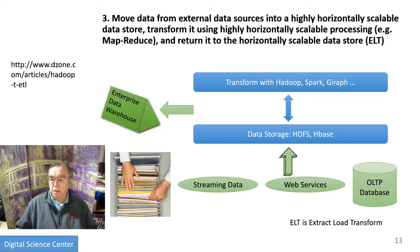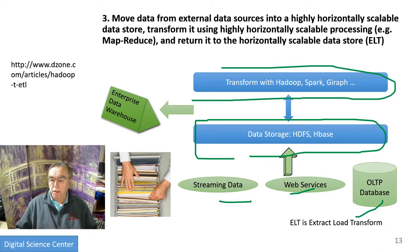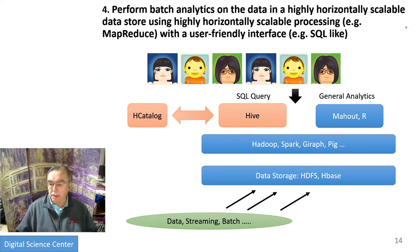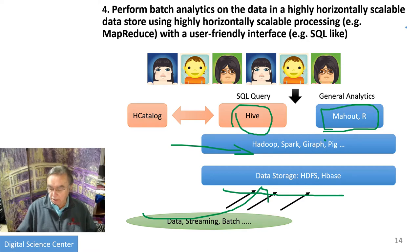Here is the pattern called moving data from one store to another. Streaming data, web services, and databases go temporarily into HDFS, maybe with HBase, then get transformed and sent to the enterprise warehouse which accumulates all the world's data. Another pattern is big data analytics: data storage is loaded from streaming to batch, then basic programming models are applied — this corresponds to levels 15 and 15B. We can run a SQL query using Hive, which is SQL on MapReduce, or use Mahout, R, or other analytics libraries for clustering and so on.